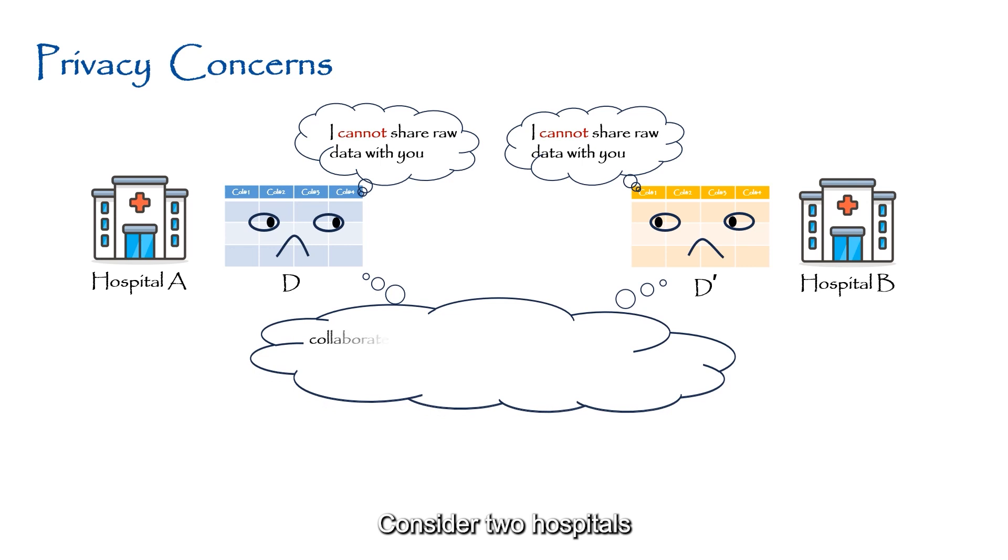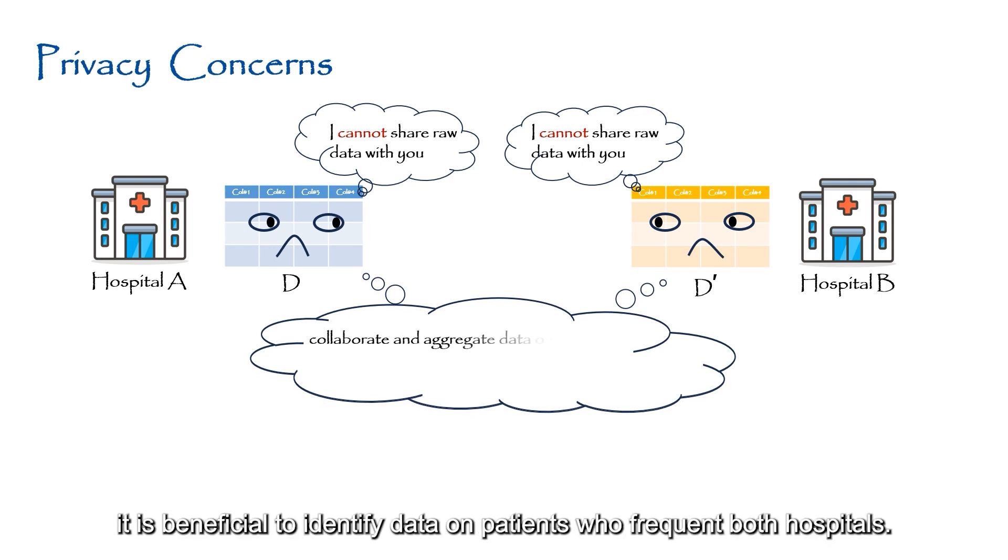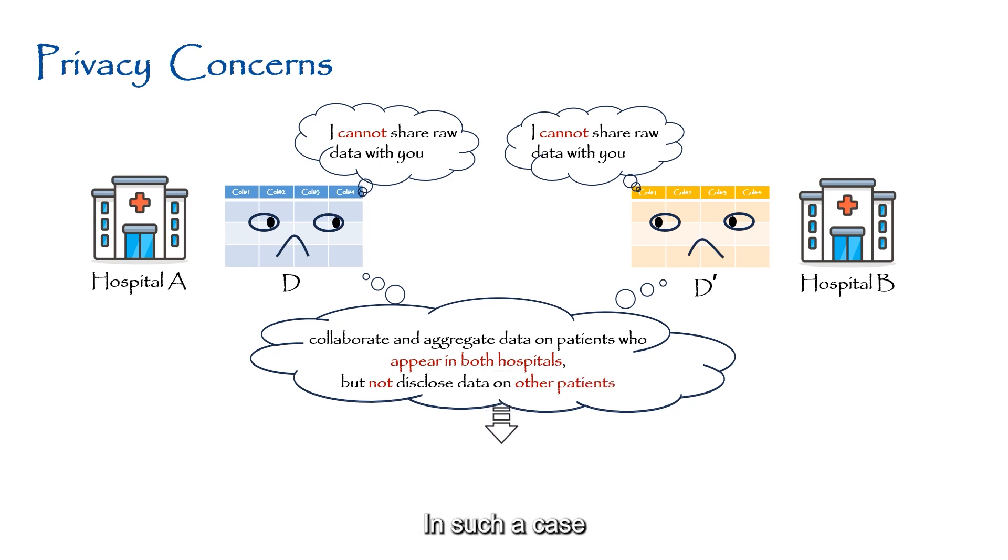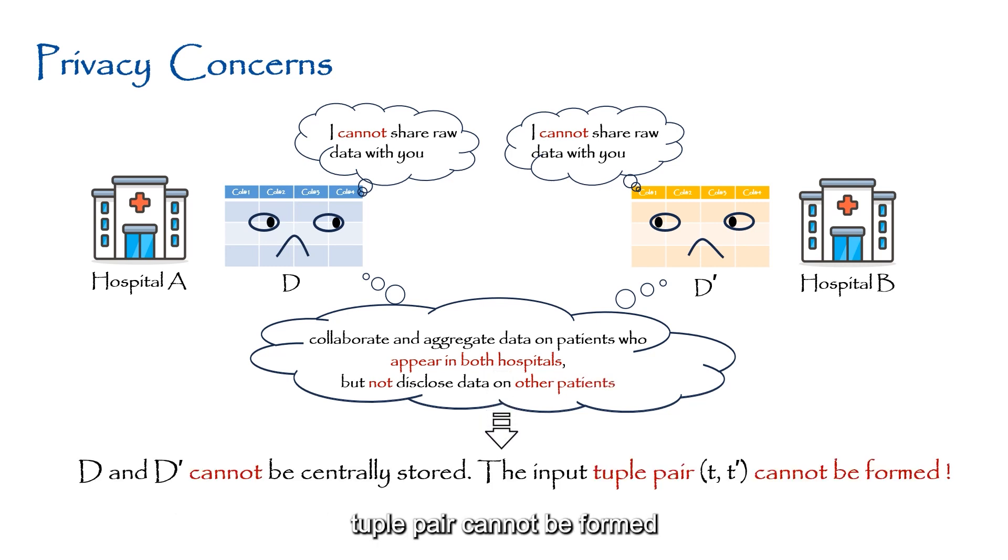Consider two hospitals. It is beneficial to identify data on patients who frequent both hospitals. Also, it is important to protect patient privacy and not disclose data on other patients. In such a case, tuple pairs cannot be formed, and privacy-aware ER is needed.